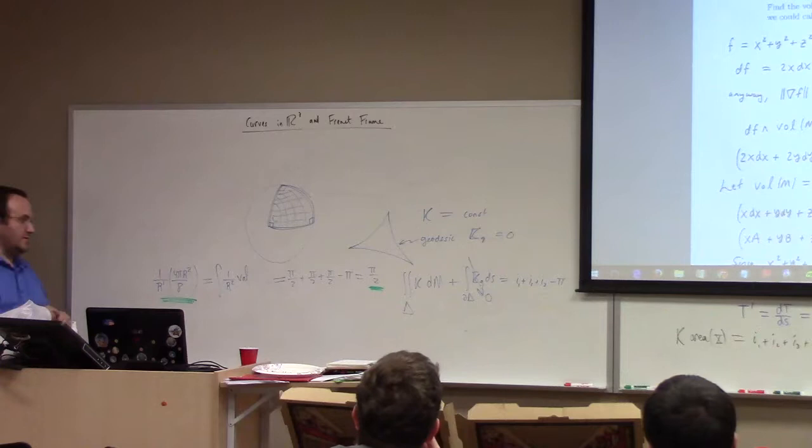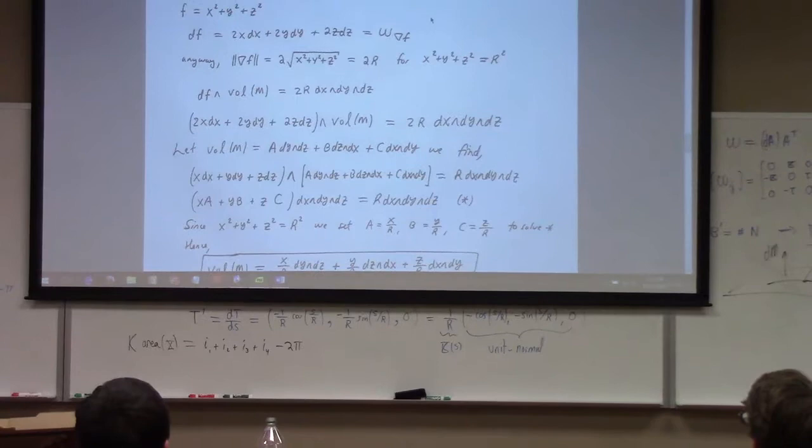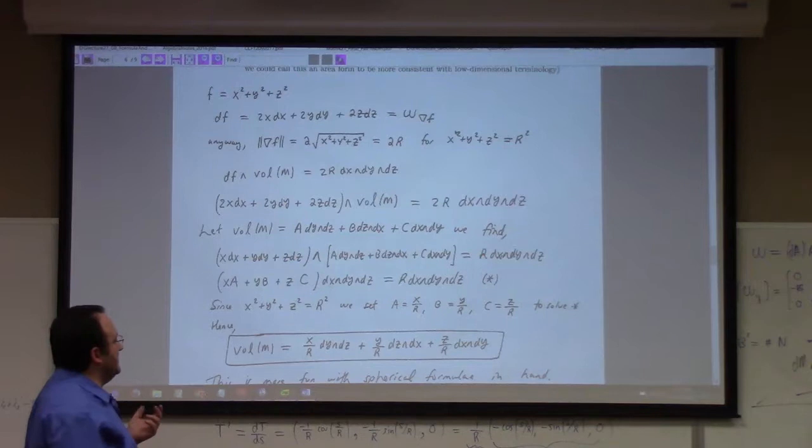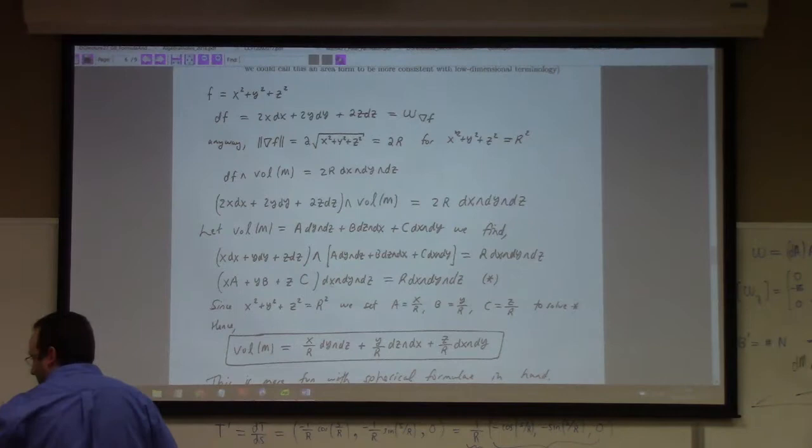That's the interplay between the Euler characteristic and Gaussian curvature. Now, for the volume form calculation: I asked you to calculate the volume form of M where it's implicitly defined. The condition is df wedge the volume form equals 2r times dx wedge dy wedge dz, where 2r is the length of df.